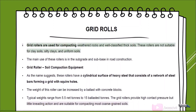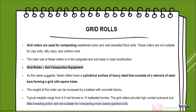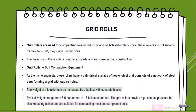Grid rollers are used for compacting weathered rocks and well-graded coarse soils. They are not suitable for clay soils, silty clays, or uniform soils. Their main use is in the subgrade and sub-base in road construction. These rollers have a cylindrical surface of heavy steel consisting of a network of steel bars forming a grid with square holes. The weight can be increased by ballasting with concrete blocks, with typical weights ranging from 5.5 net tons to 15 ballasted tons.